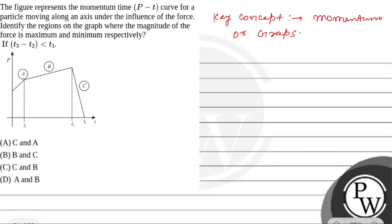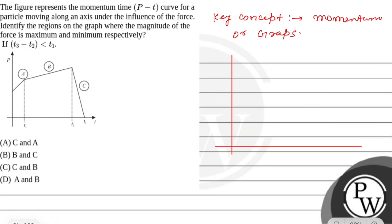We can read graphs of different fundamental quantities or different parameters like v-t, a-t, f-t graphs. Similarly, in this question a p-t graph is given — a momentum-time graph.